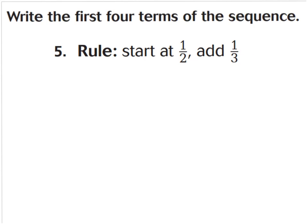Now let's look at question 5. It says write the first four terms of the sequence, starting at 1 half. I'm going to make four lines to find the first four terms. The first term is 1 half. Our job is to find the next three terms. The rule says to add 1 third, so I know my pattern will be increasing by 1 third each time. The first step is to add 1 third to my 1 half, which we learned back in an earlier lesson on adding fractions with unlike denominators.